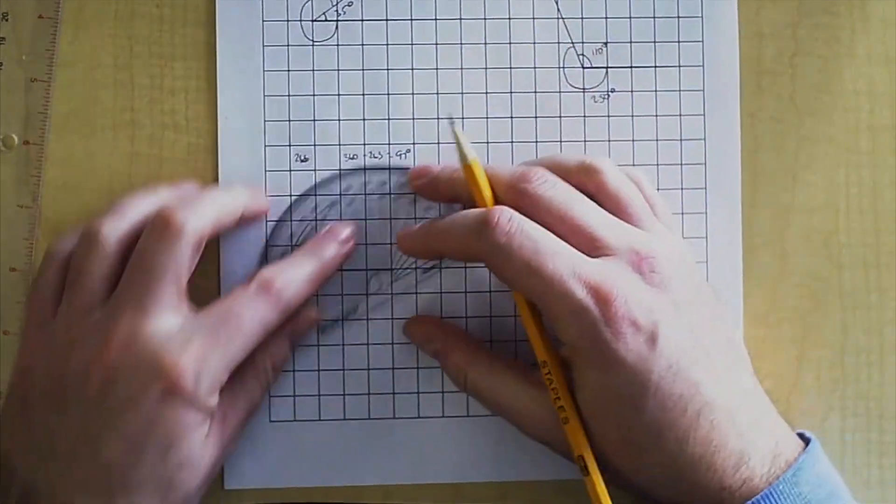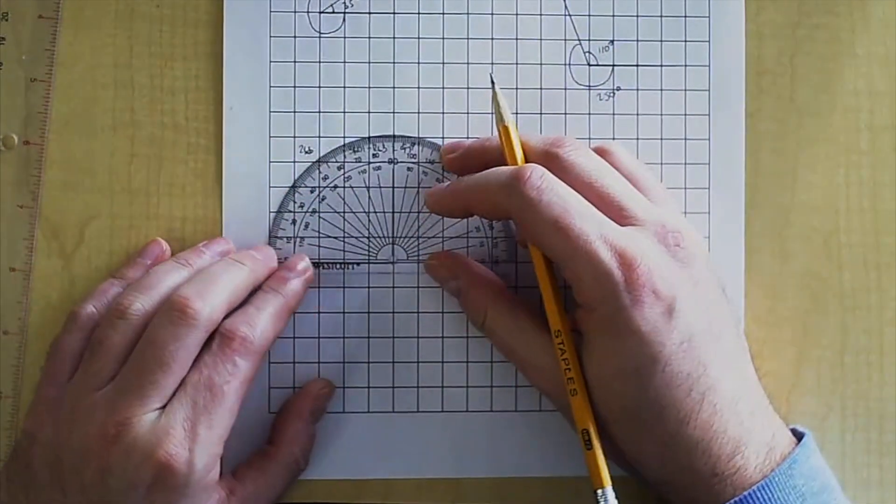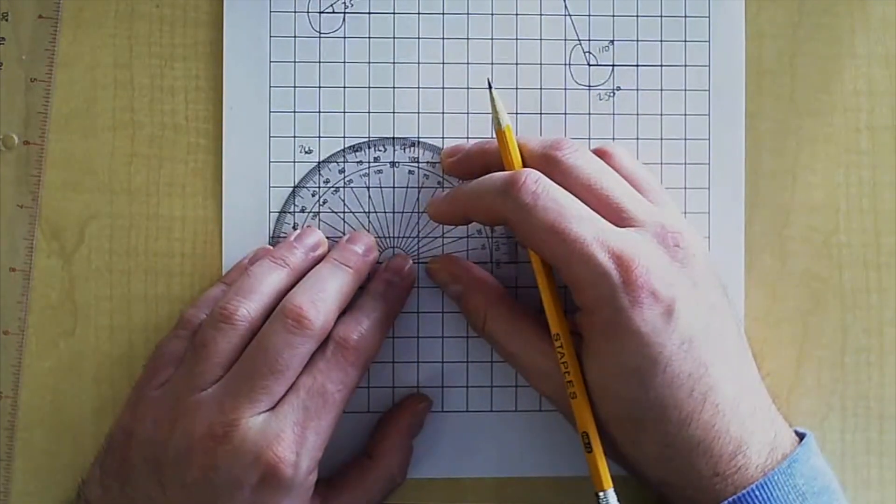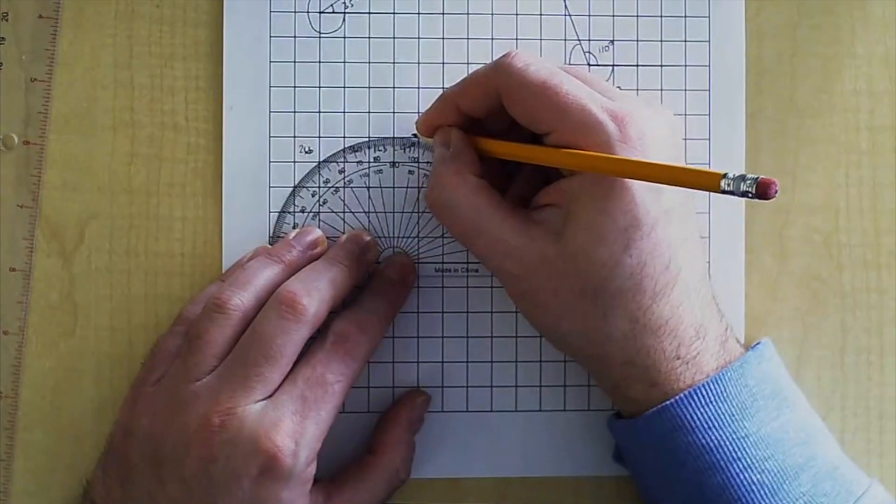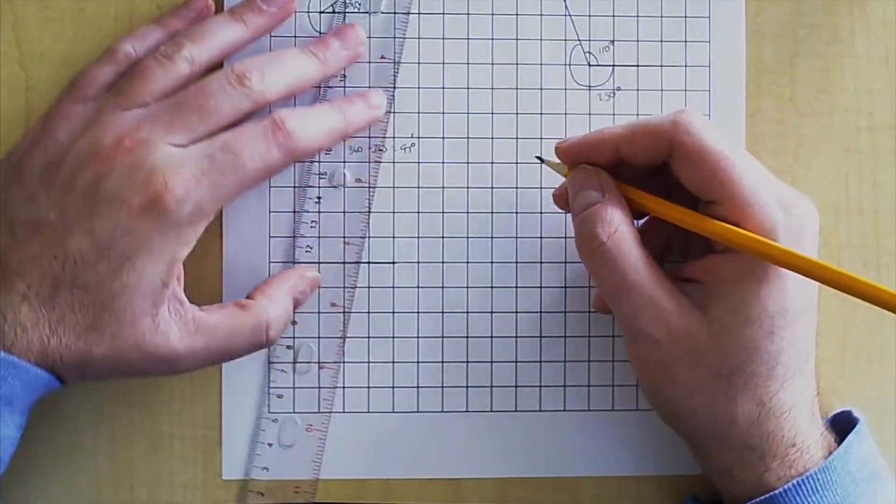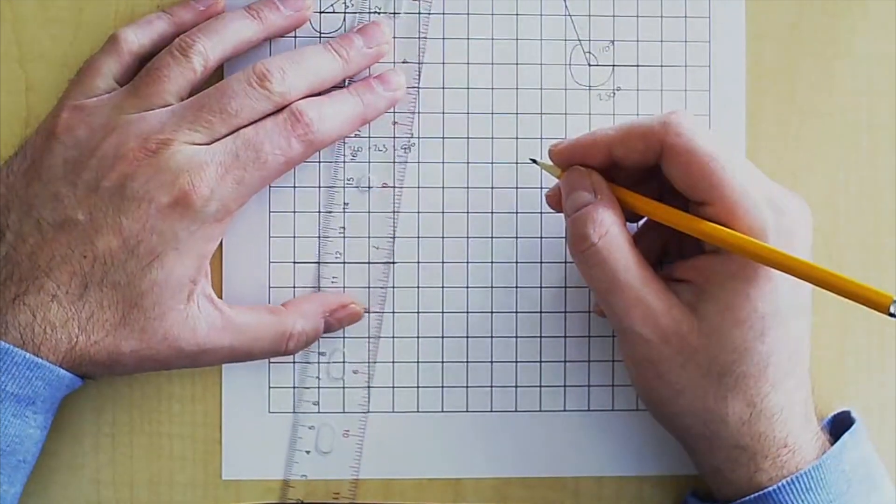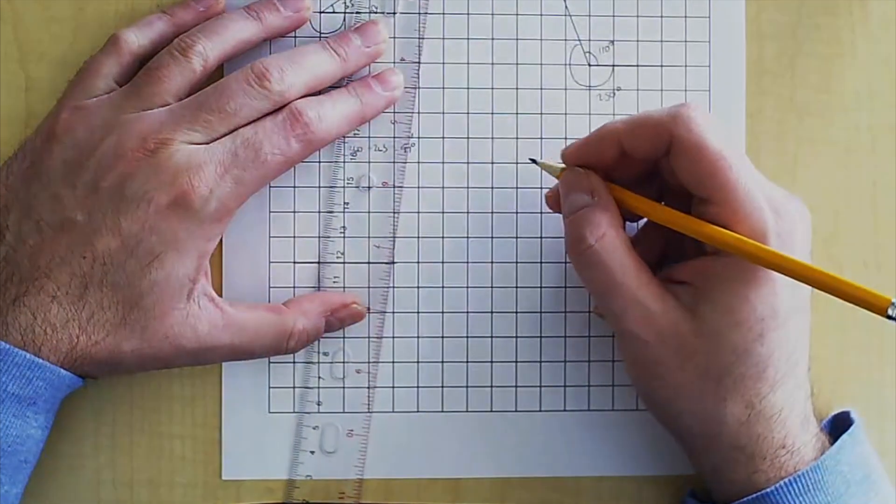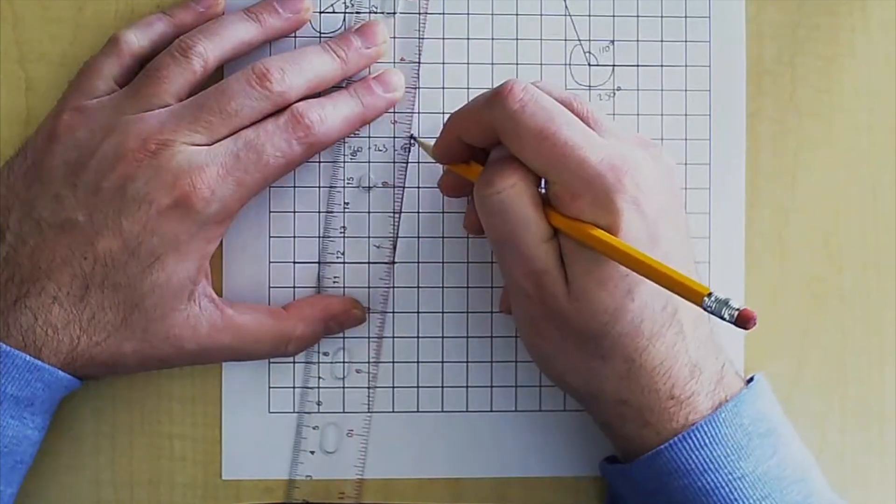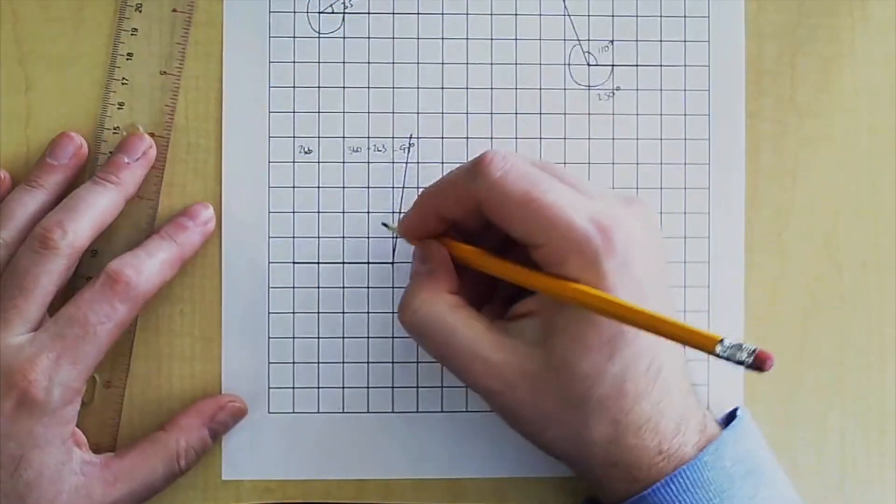Now you draw a 97 degree angle. 97 degrees is going to be right before 100, so it's going to be right around here. Connect the lines. Remember, with the ruler, it's just to draw a straight line. You're not measuring anything right now. So you just drew a 97 degree angle.